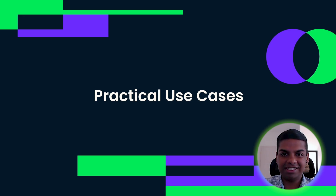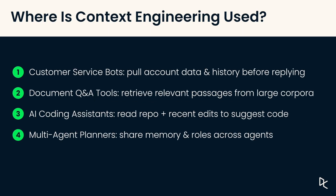So where is context engineering used today? There are four high-impact areas: customer service bots that pull account information before replying, document Q&A tools that retrieve the right information, AI coding assistants that read your repo, and multi-agent planners that share memory across roles. These are systems you already use, powered by structured context. Let's look at all of them in a bit more detail.